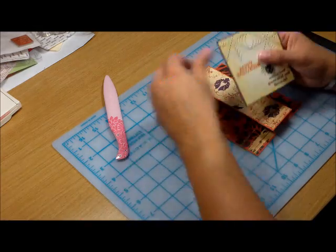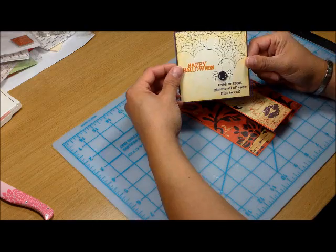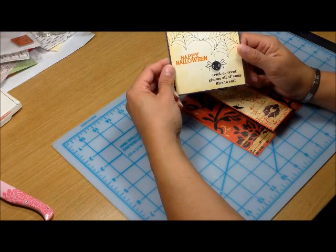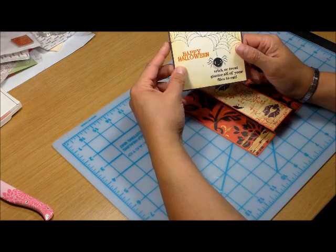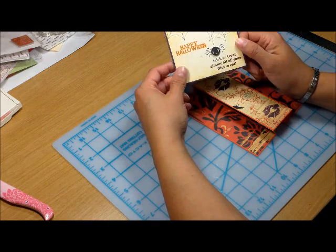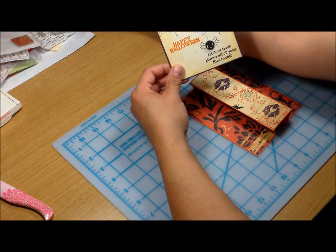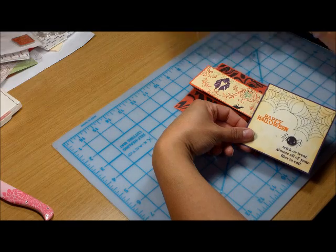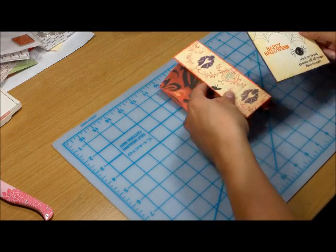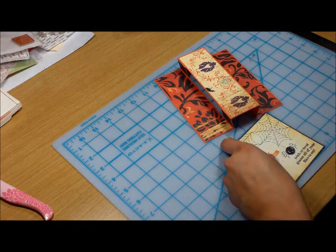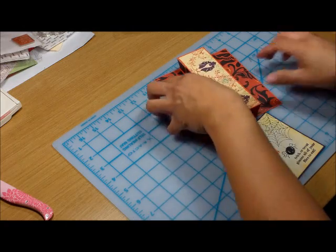Now we just need to design the front of our card. Make a little miniature card front that's going to be 4 inches by 4 inches squared. I use this cute little set from Peachy Keen Stamps. It's called Spider and Web.